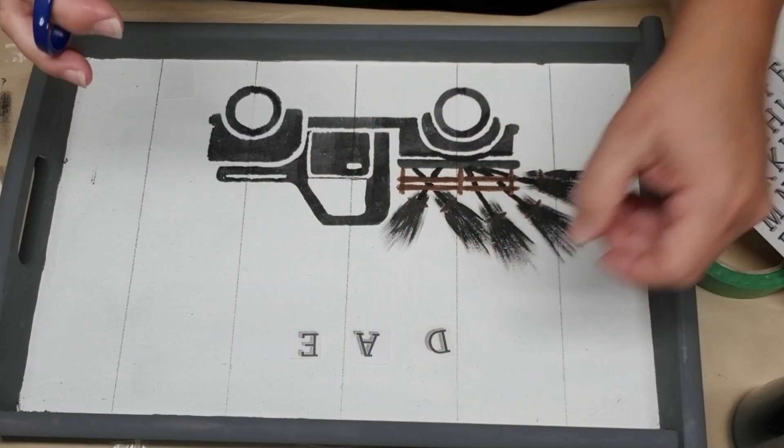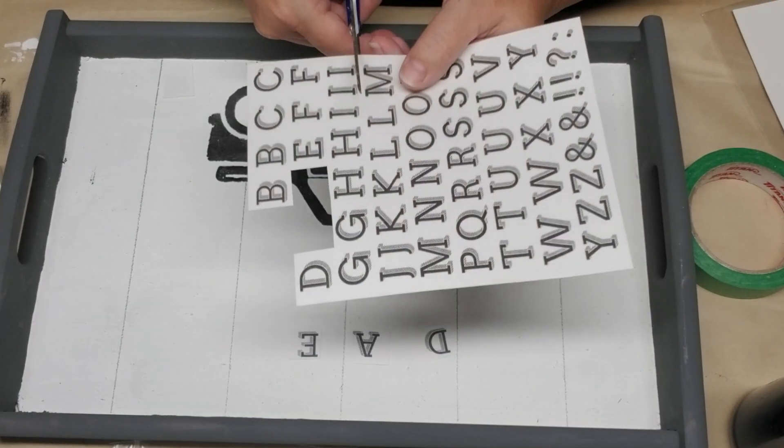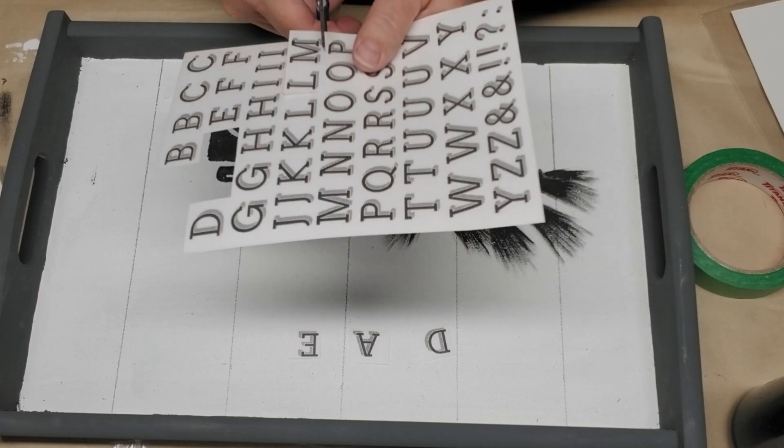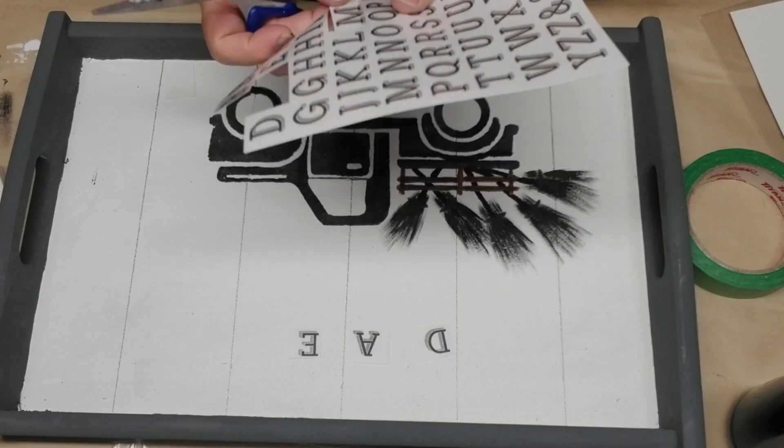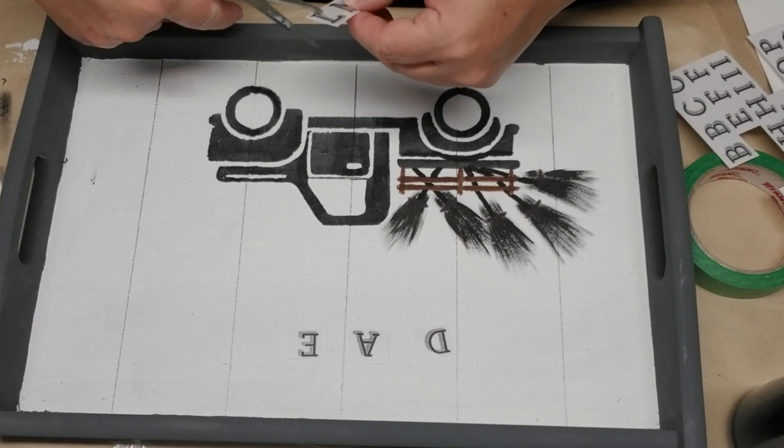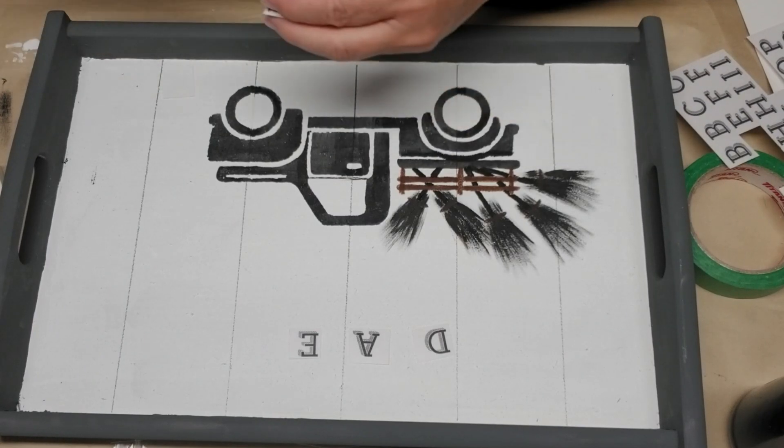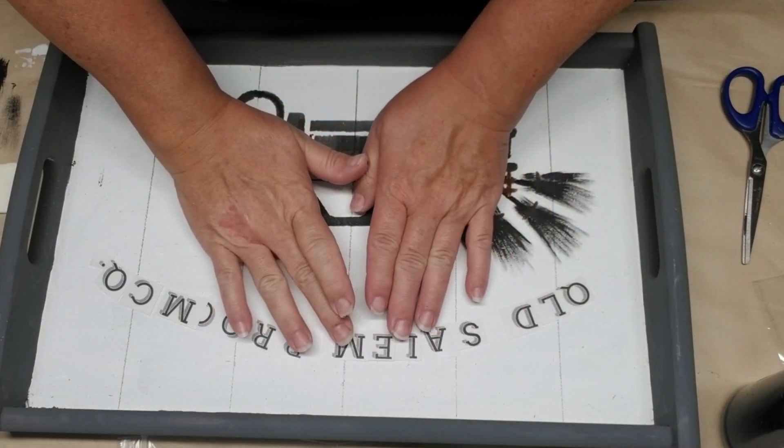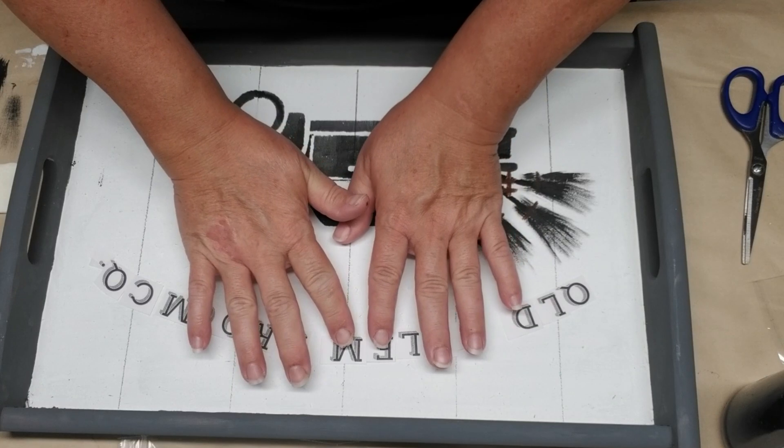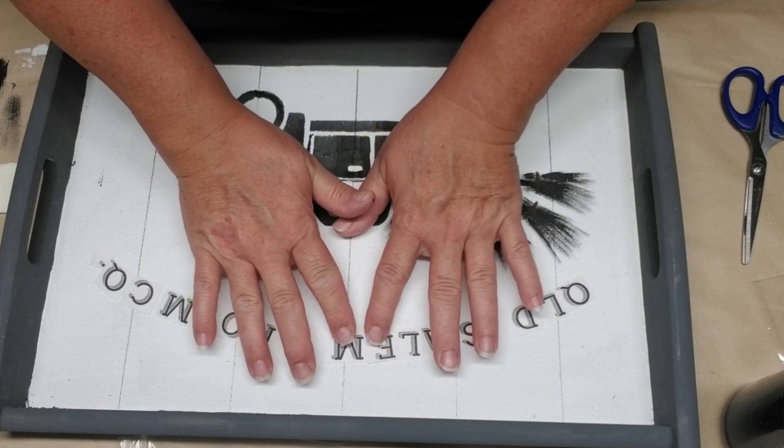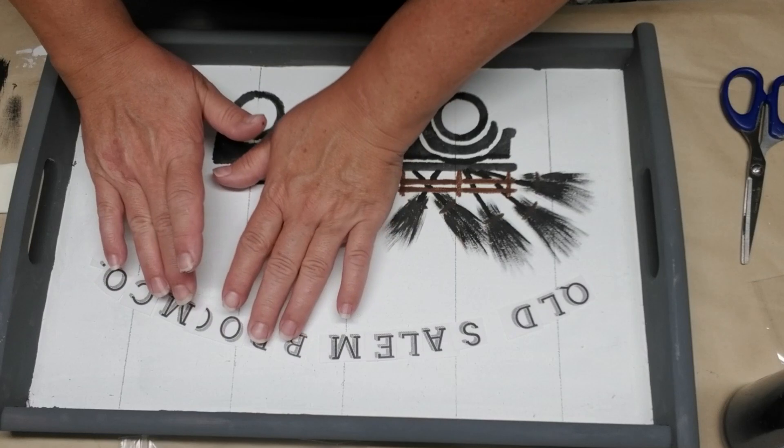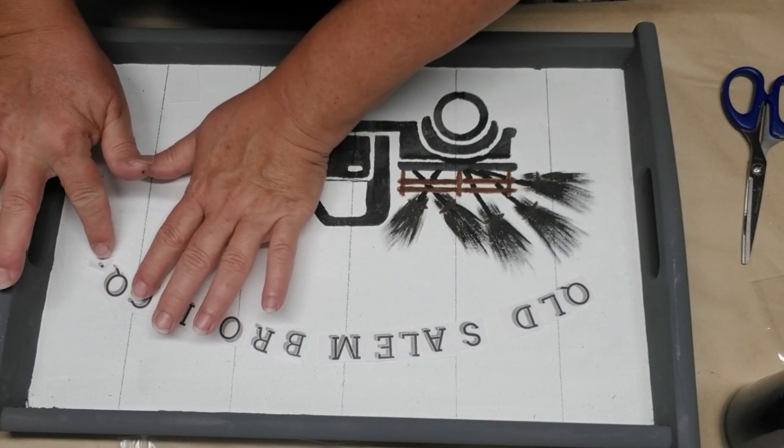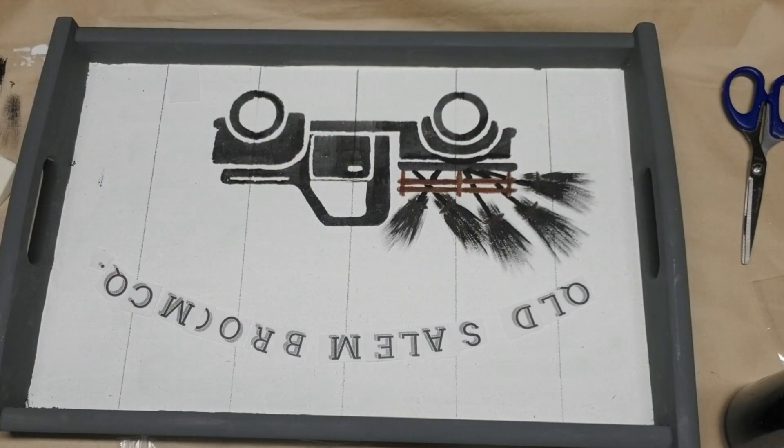So I'm going to be putting the words old Salem broom company and I want them to go in an arc like you see a lot of professional and high-end signs they've got things on an arc and not necessarily always straight. Now I had two packages of these letters but I still ran out of the O's so for the word old and the word company I'm using a Q but I will be trimming off that little tail and here I'm just setting it up to make sure it's all going to fit the way I want it to.